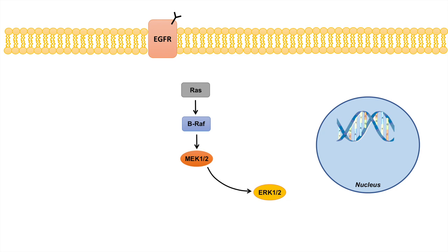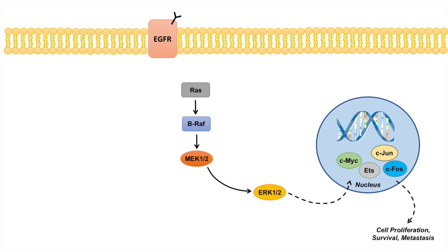Once ERK is activated, it will actually translocate to the nucleus and will activate several different genes and transcription factors. Some of them include CMYC, ETS, CJUN, and CFOS. Now these targets are very important because they are actually related to cell proliferation, survival, and metastasis.